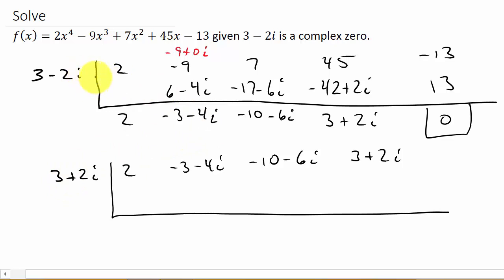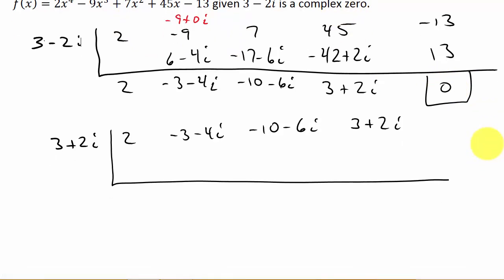And one thing that you need to make sure of when you're doing this and you don't end up with a 0 here, then you made a mistake. Whenever you use synthetic division to divide this complex zero into the polynomial, you have to get a 0 because they're telling you it's a zero. So if you don't get a 0, then you messed up somewhere.